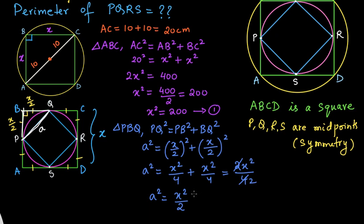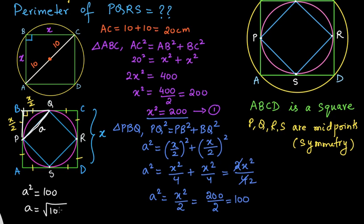We know from the first figure that x² equals 200. Substituting: a² equals 200/2, which equals 100. Therefore a equals the square root of 100, which is 10 centimeters. So the side length PQ is 10 centimeters.